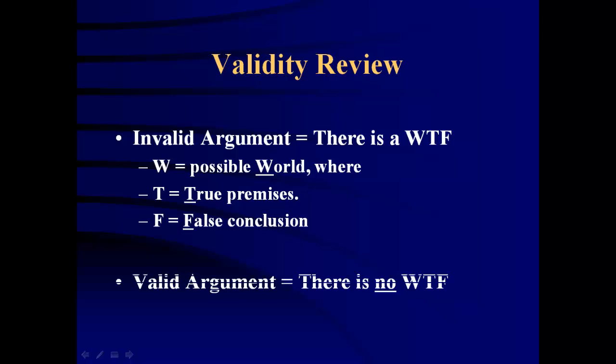So, a valid argument is a situation in which there is no consistent situation in which the premise or premises are true while the conclusion is false. That would be impossible in a valid argument to have true premises with a false conclusion. Alright, so much for Validity.